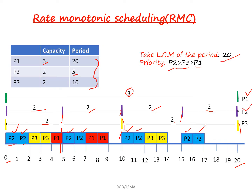After completing the P2 process allocation, we move on to the next priority process, which is P3. The P3 process has to execute two units for a period of 10, so I am placing P3 two times here. Next, you have to allocate the P1 process. P1 has to execute three times over a period of 20, but since P2 takes two slots every five intervals, we only have one remaining space, so we can allocate P1 only once here in the 0-to-5 interval.